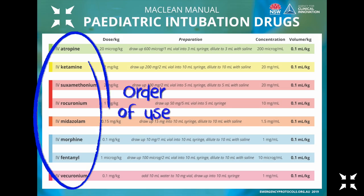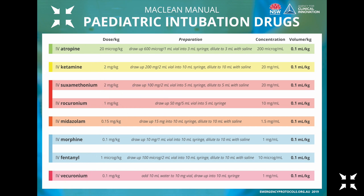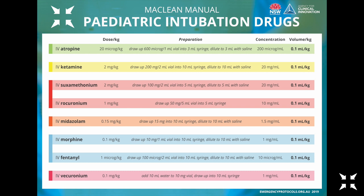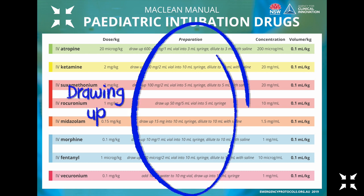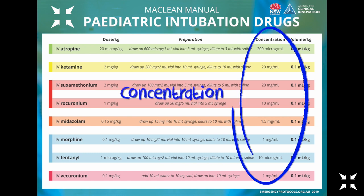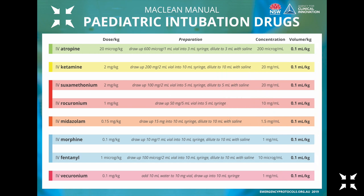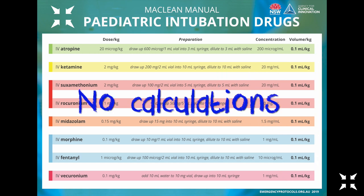The drugs are in order of use, using common doses. These are the drawing instructions, the concentrations. And it works out to 0.1 ml per kilo of every drug. There are no calculations.